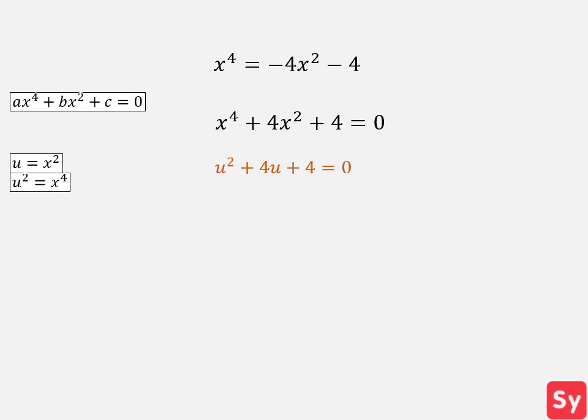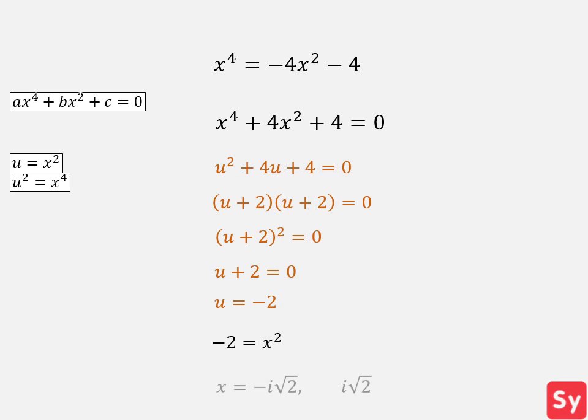Next, we factor the quadratic expression and get u plus 2 times u plus 2 equals zero. We can rewrite that as u plus 2 squared equals zero. Now we take the square root of each side and get u plus 2 equals zero. We solve for u and get u equals negative 2. Next, we'll rewrite the answer in terms of x. We set negative 2 equal to x squared. We solve for x and get x equals negative i times the square root of 2 and i times the square root of 2 as our answer.